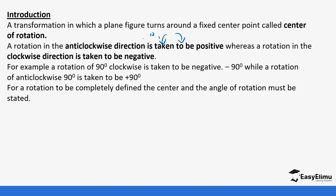For a rotation to be completely defined, the center and the angle of rotation must be stated. If you are not given them, you need to look for them. In most cases, you are either looking for the center, the angle of rotation, or the image. It is important that if you have an object and want to get an image after rotation, you need to have the center and the angle of rotation.